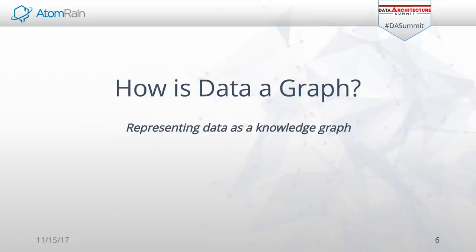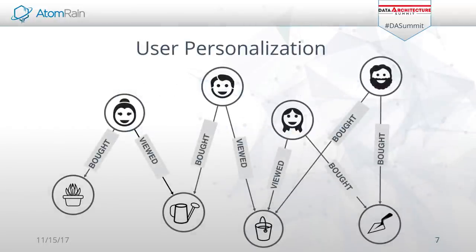So first off, how is data a graph? A lot of times when you're looking at your data, you're so used to thinking in SQL that you may not see how it's connected and in which ways it is a graph. Here we have a user personalization use case where you may use it to drive recommendations. The faces are people — you have a person that bought some product, viewed another product, another person that bought that product, viewed this product. You can do recommendations like what you see on Amazon: somebody bought this, also bought that.